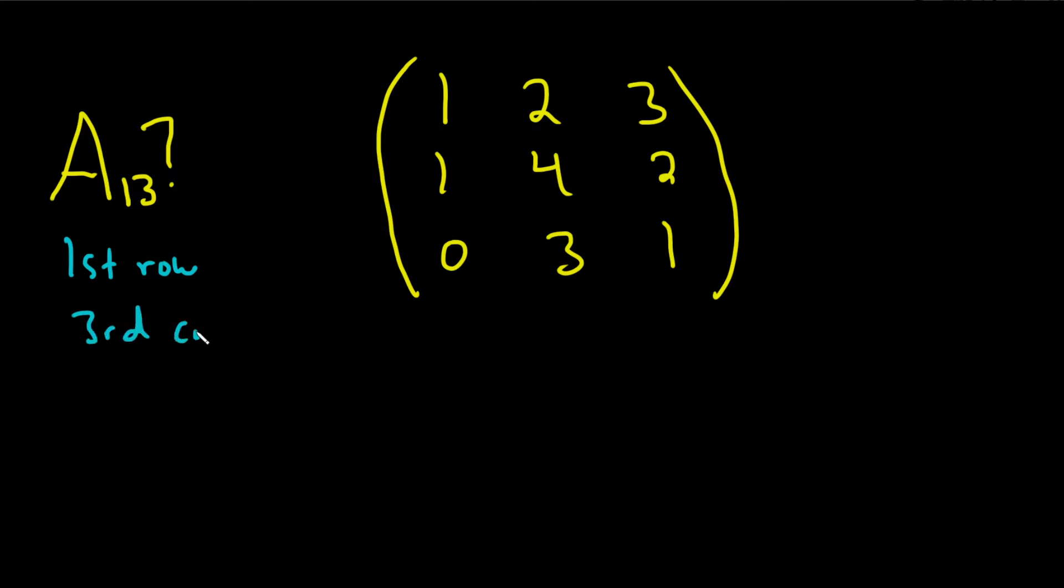That's what we want. So we want the cofactor of the entry in the first row, third column. So that would be this one here. We want to find a cofactor of 3.